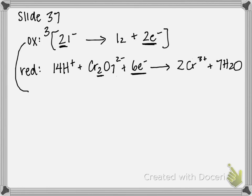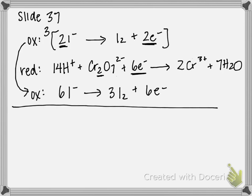So if I rewrite that down here, it's going to be six I minus gives me three I two plus six electrons. So we've multiplied everything out. My electrons transferred are equal to one another.